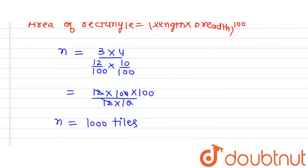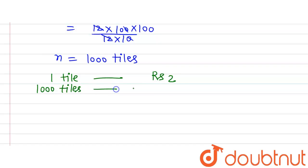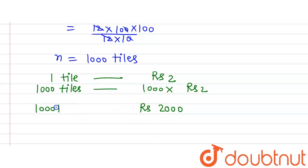We are given the cost of 1 tile is rupees 2. Therefore, the cost of 1000 tiles will be 1000 multiplied by 2, which gives rupees 2000. So the total cost required to cover the wall is rupees 2000, and that is what we were required to find.